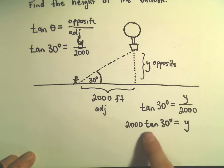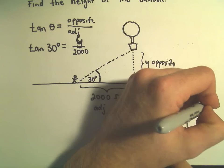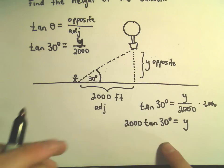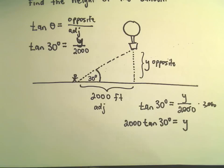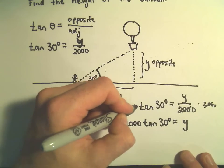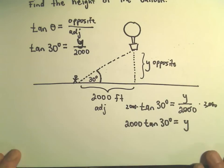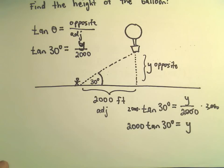we'll get 2,000 times tangent of 30 degrees on the left. On the right, they cancel out so we get Y by itself. Now, this is something I would just plug into a calculator. At this point, make sure your calculator is in degree mode.